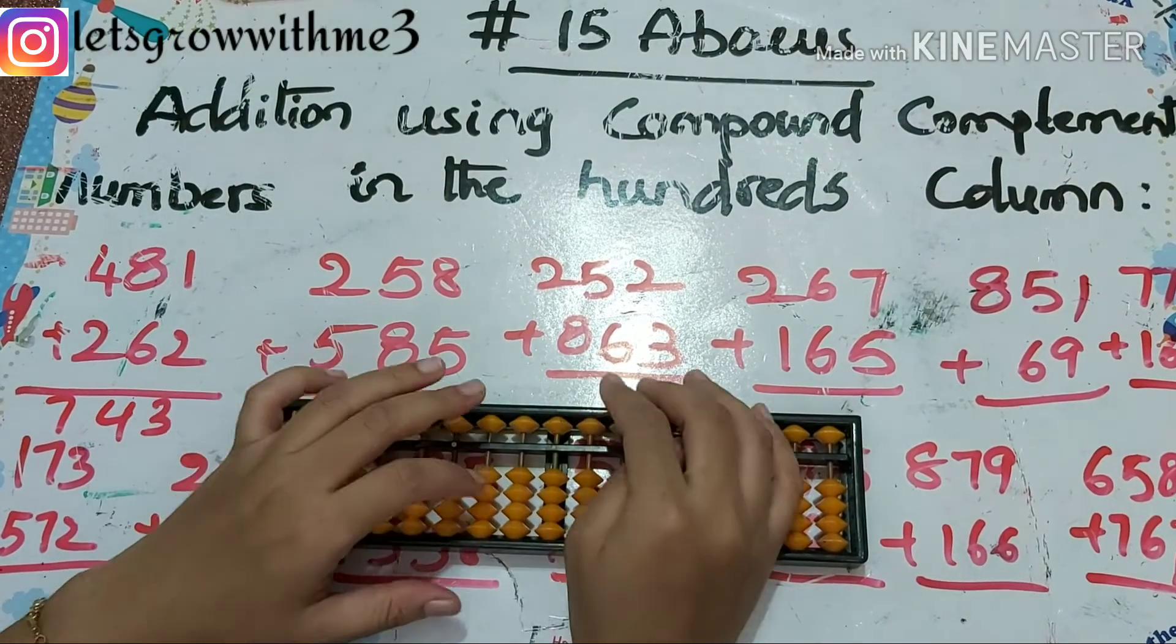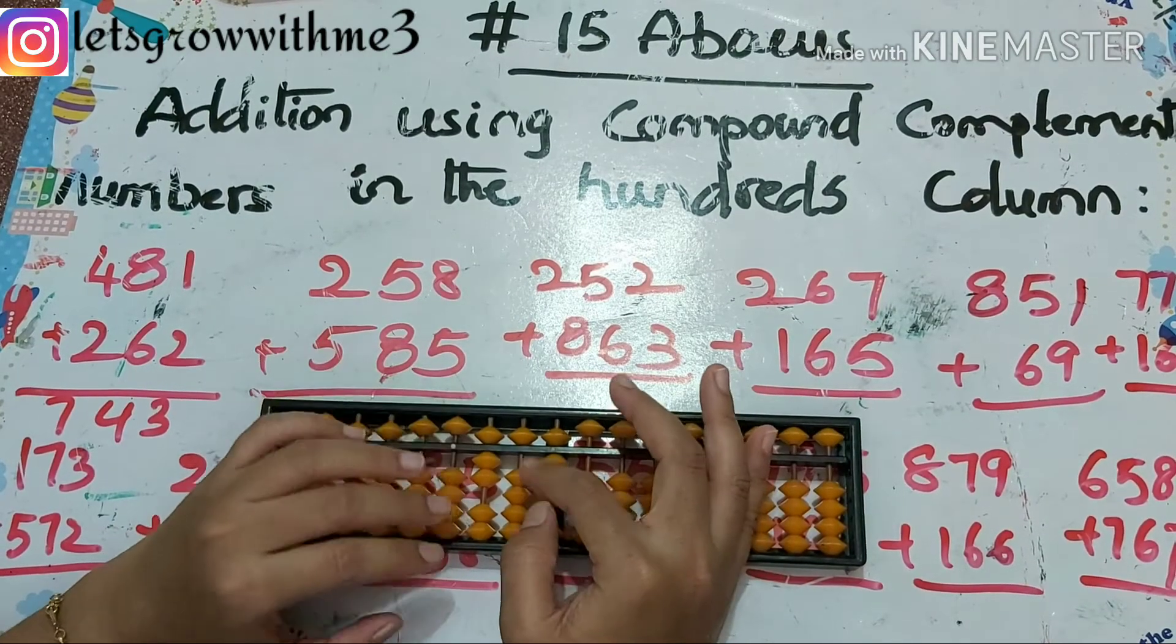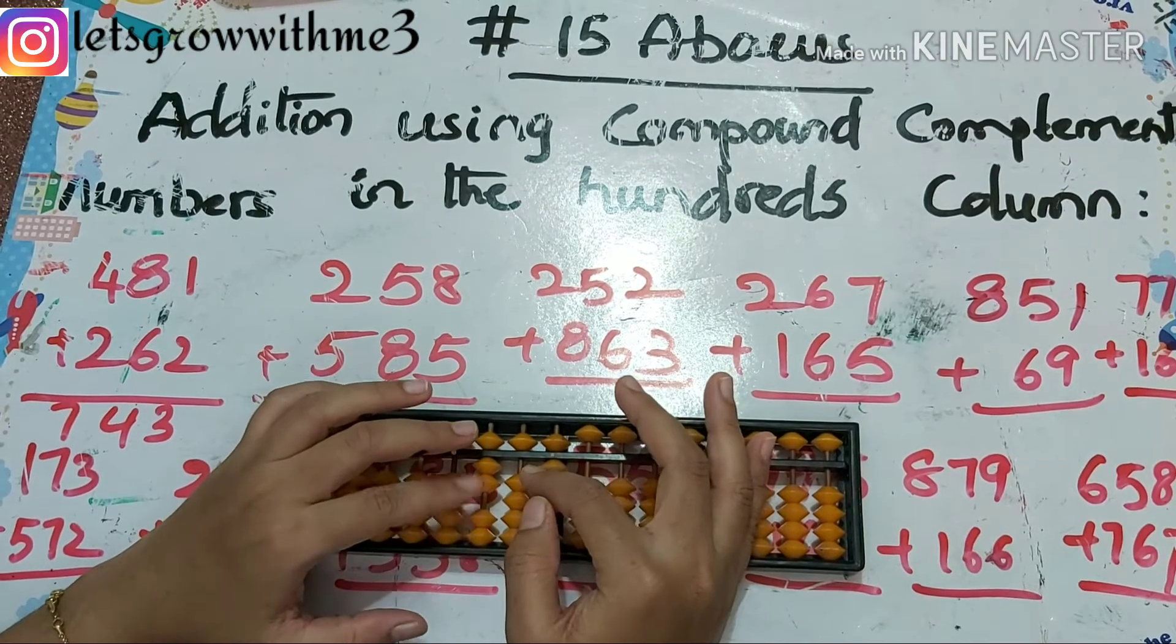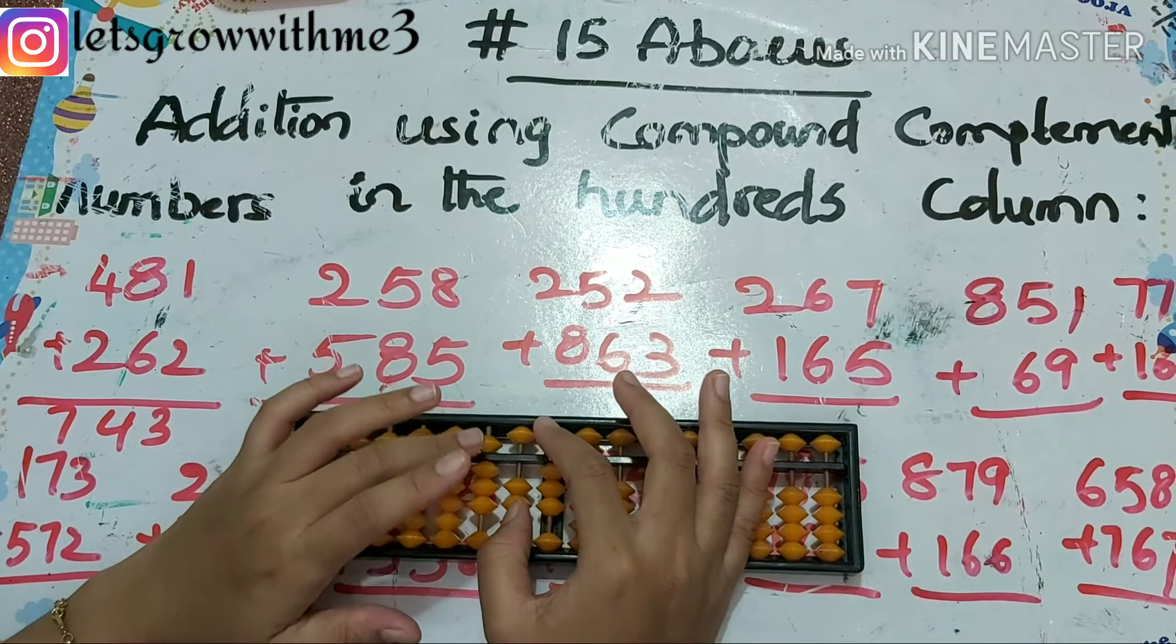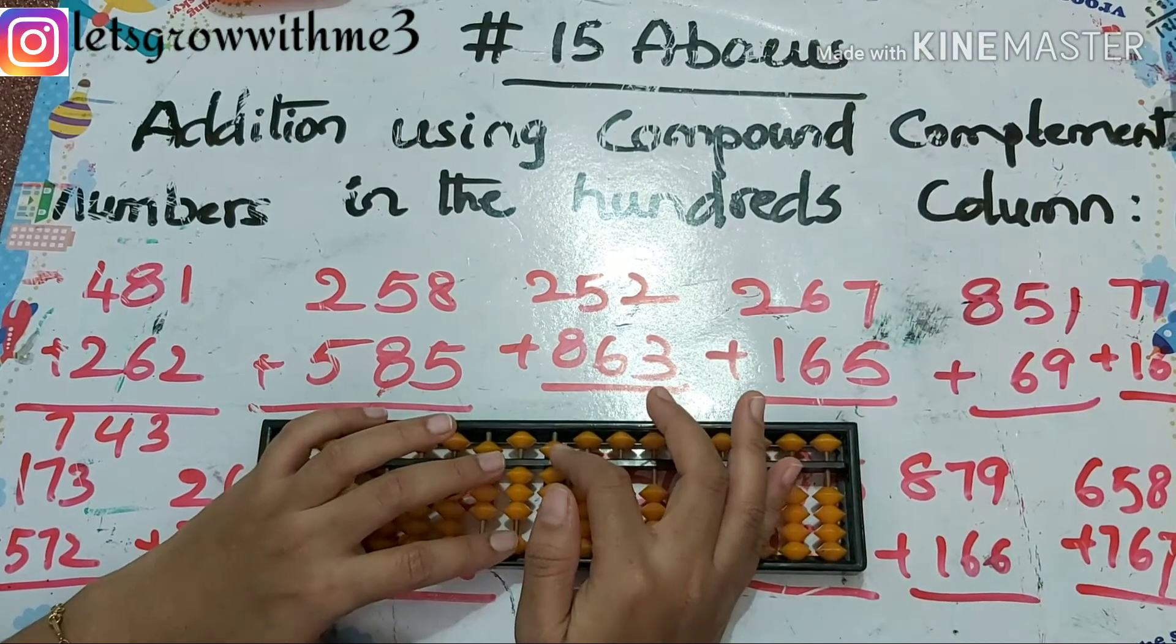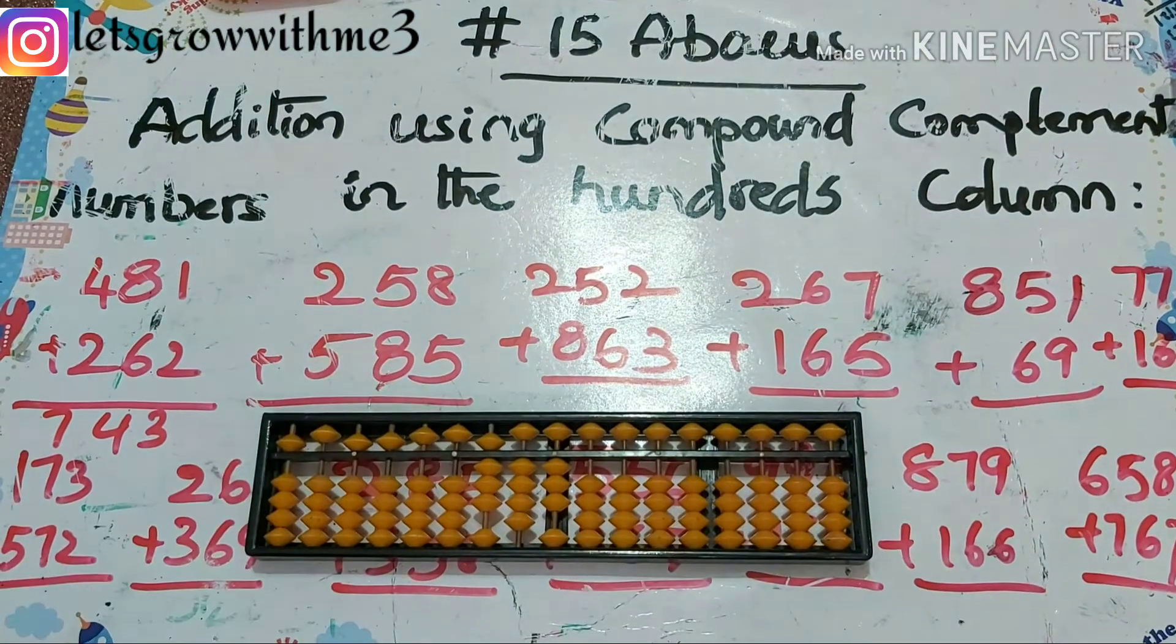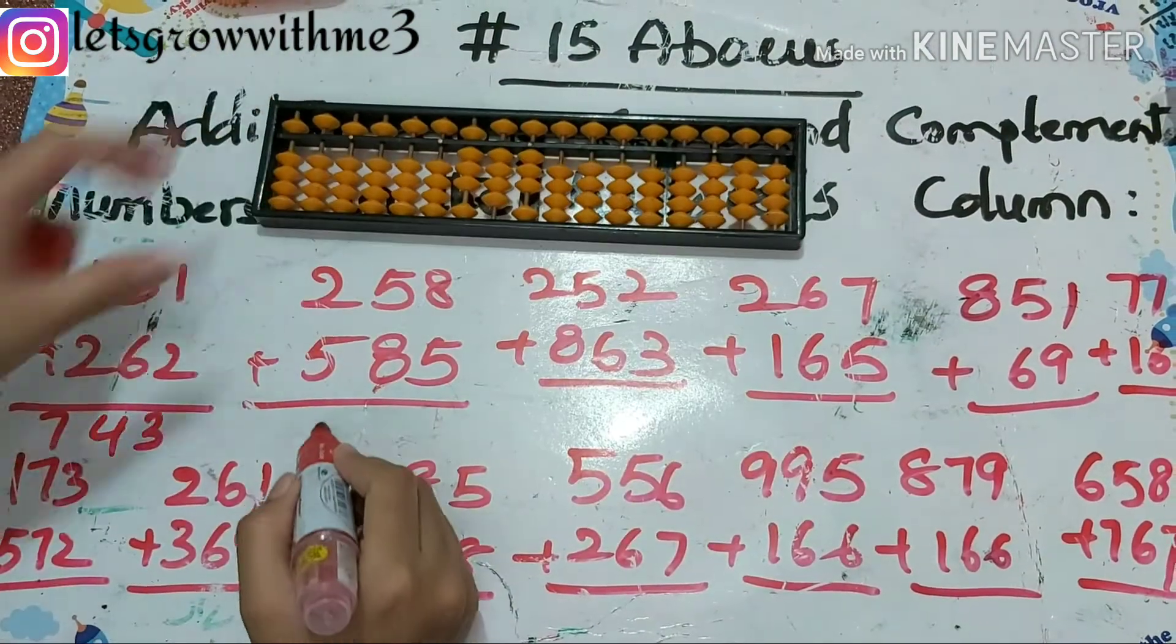Next one: 258 plus 585. So how to add 8? Papa, mama, babies up. For 8, free babies. Done. Next plus 5, plus 10 minus 5. So our answer is 843.